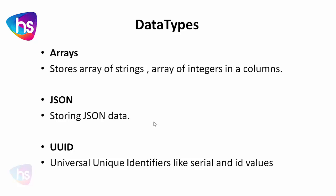The ARRAY type stores an array of strings or integers within a single column — it stores a group of list items. JSON data can be stored in JSON format in a single column. UUID stores universally unique identifier values such as sequence ID values.